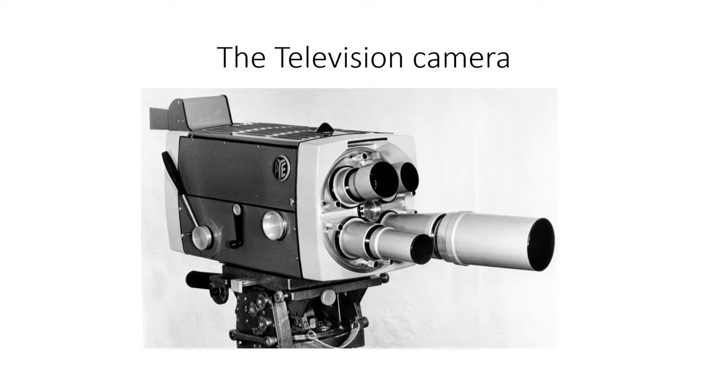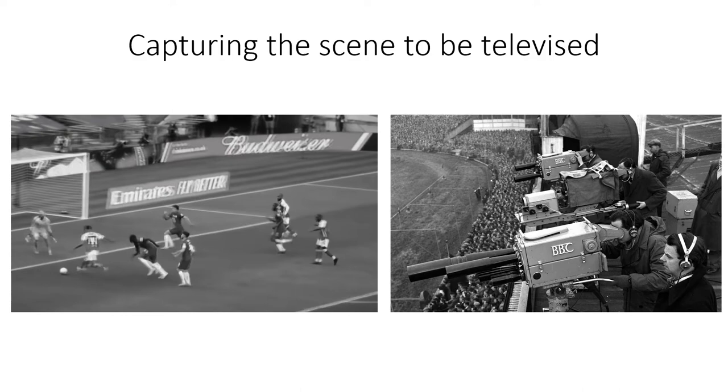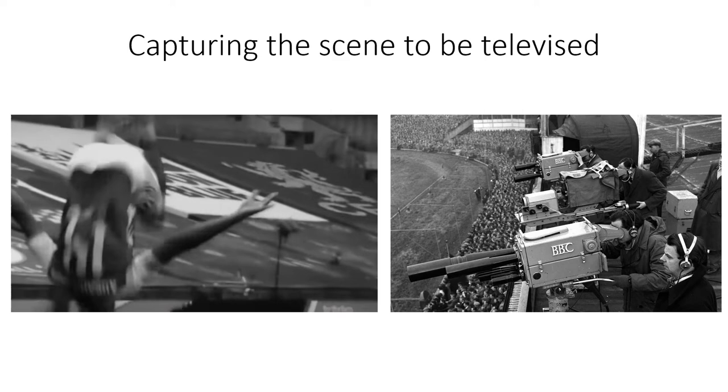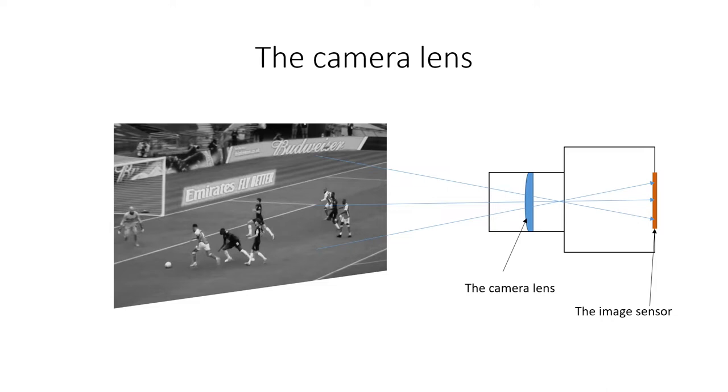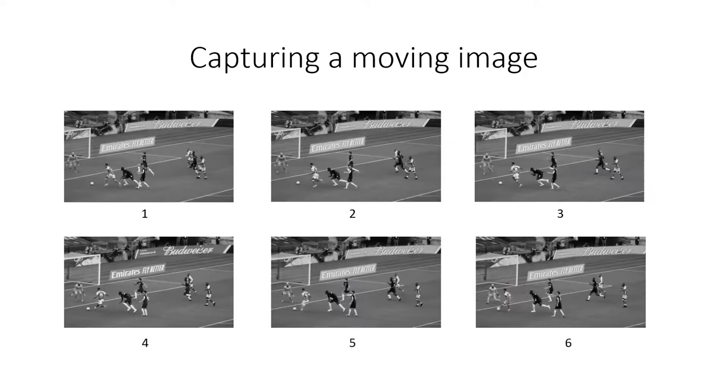The TV camera collects the light from the scene being televised with a lens in a similar way to the way a still camera works. The camera lens collects the light from the scene and projects this onto the image sensor. The sensor is then used to convert the image into an electrical signal. In order to capture a moving image, the camera takes a succession of still pictures every 25th of a second. Each of these pictures is called a frame. When these pictures are played back, the viewer does not see the separate frames but sees a moving image due to the persistence of vision of the eye.